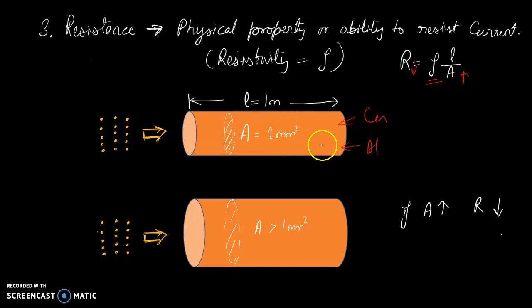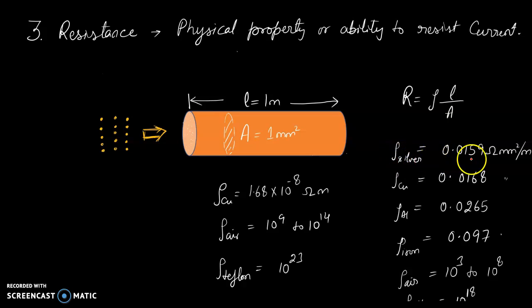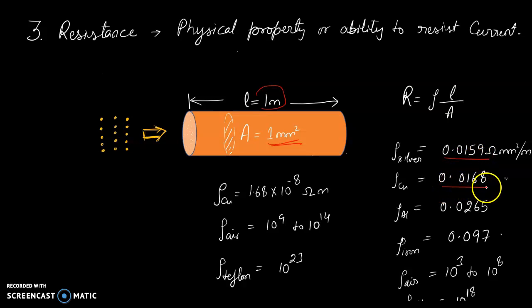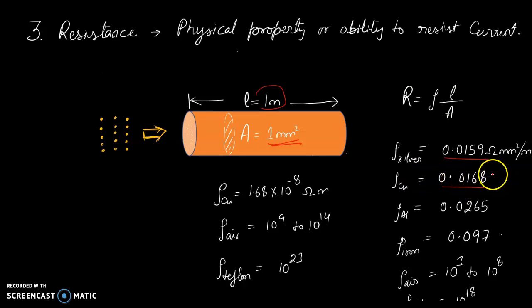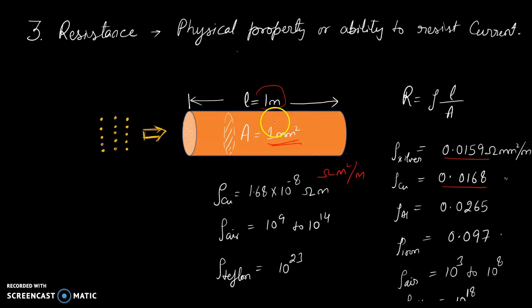The objective of taking 1 mm² and 1 meter is so that we can get some value for correlation. For silver, resistance comes to around 0.0159 — the lowest. Copper is 0.0168. At the higher end, something like 10³ to 10⁸, and Teflon is 10¹⁸. So for copper, the resistivity is low — only this many ohm·mm²/m. This sounds very appreciable, and that is why conductors are made of copper. Silver is very costly.